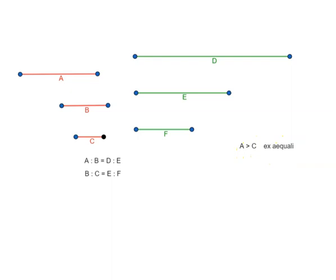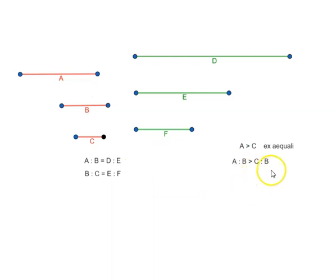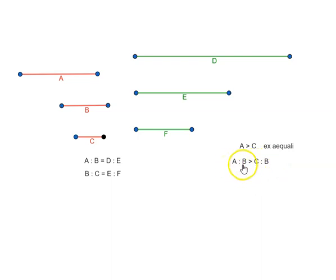So if we compare A and C with the third magnitude B, then since A is greater than C, we have A is to B is greater than C is to B. And that also means A is to B is greater than C is to E. This is based on proposition 5.8.